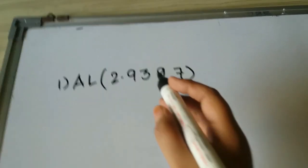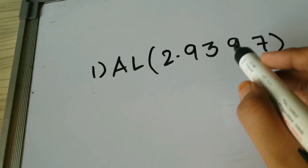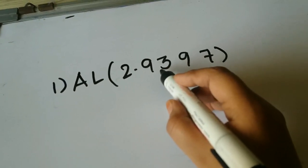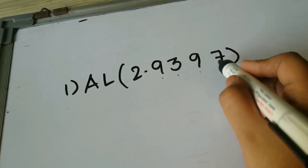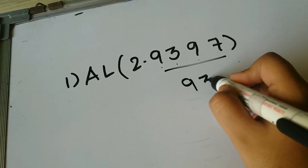Here first step would be I would calculate how many numbers are lying after the decimal point, that is 1, 2, 3, 4. I will note that down here.